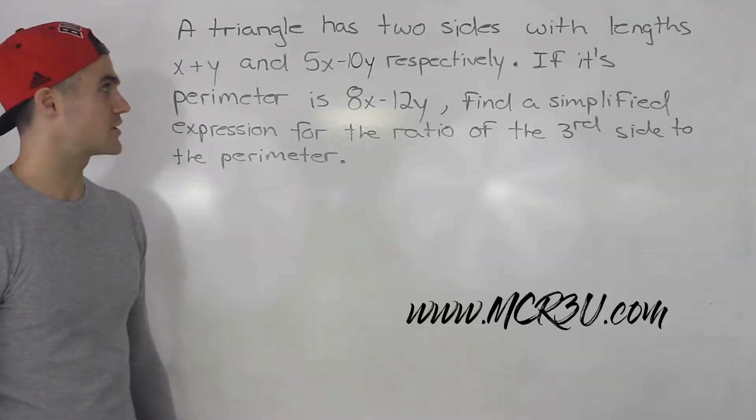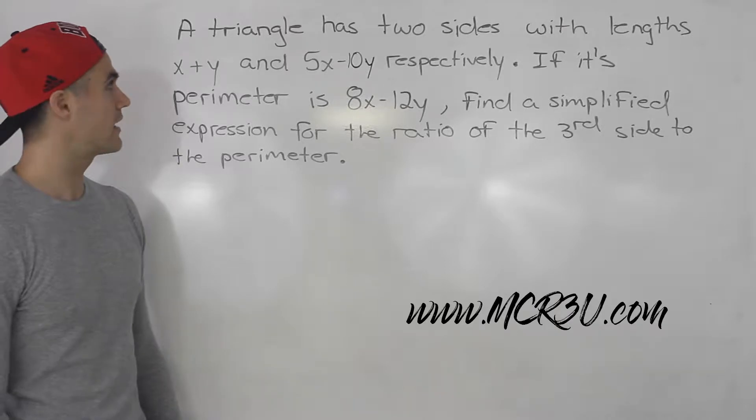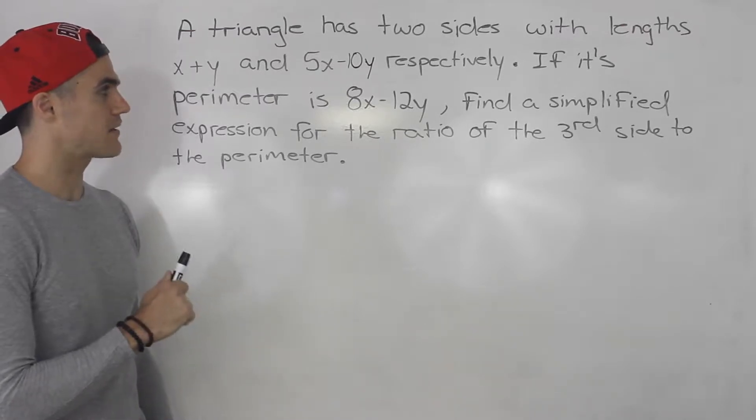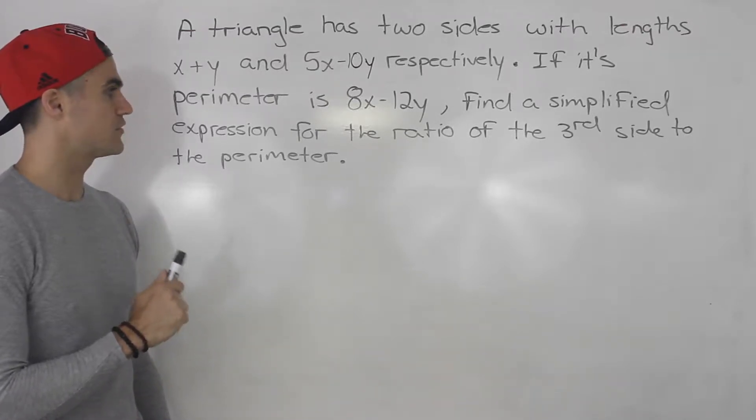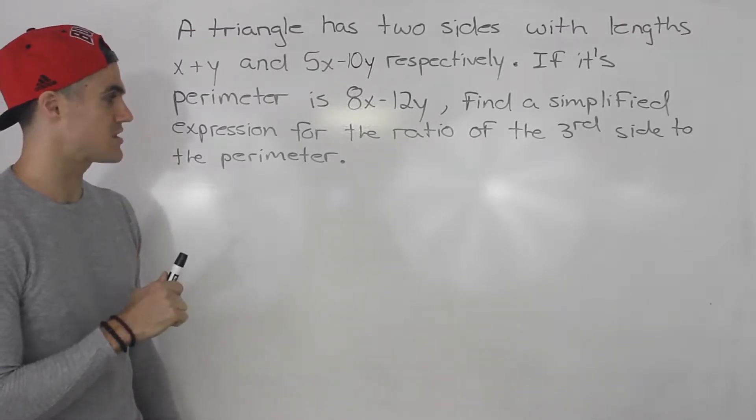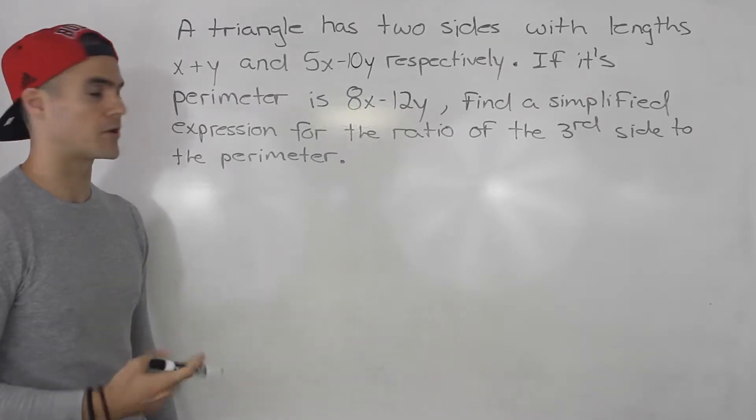What's up everybody? Welcome back. Patrick here and in this question we're told a triangle has two sides with length x plus y and 5x minus 10y respectively. If its perimeter is 8x minus 12y, find a simplified expression for the ratio of the third side to the perimeter.